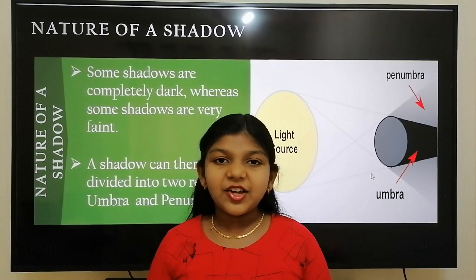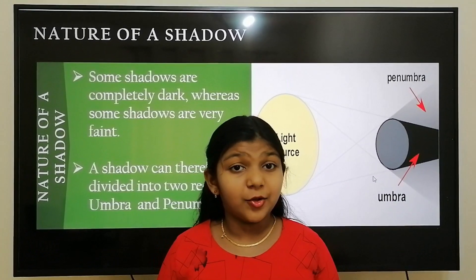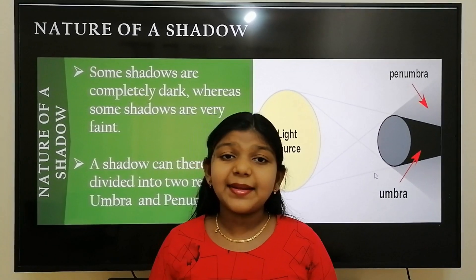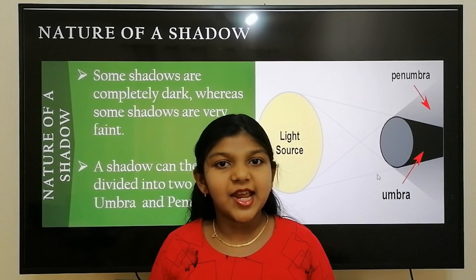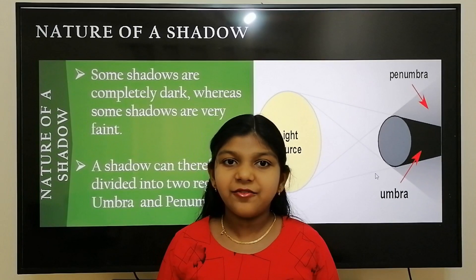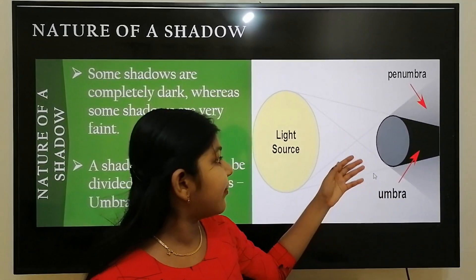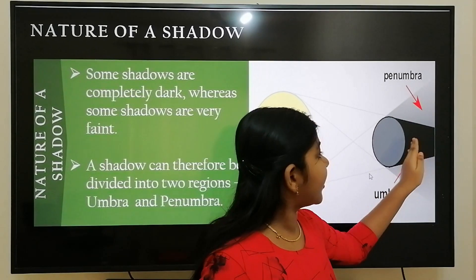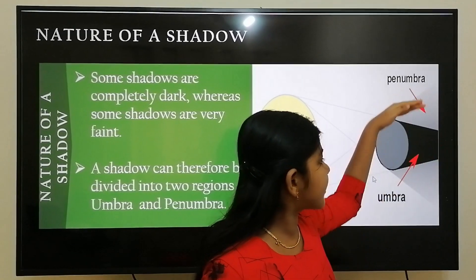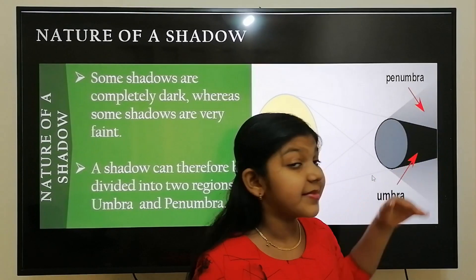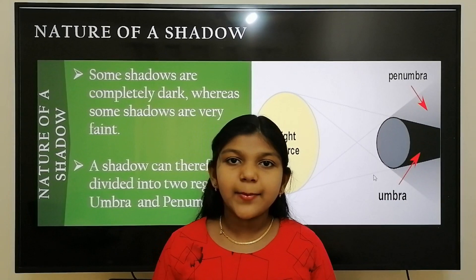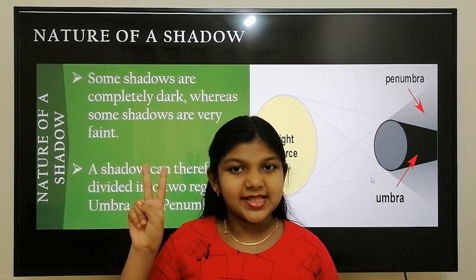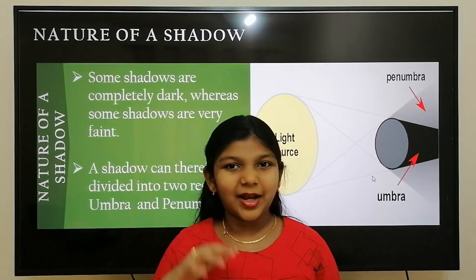Now we are going to see about the nature of shadow. Some shadows are completely dark whereas some shadows are very faint. We may observe that the central part of the shadow is darker than its surroundings. Therefore, a shadow can be divided into two regions: the umbra and the penumbra.